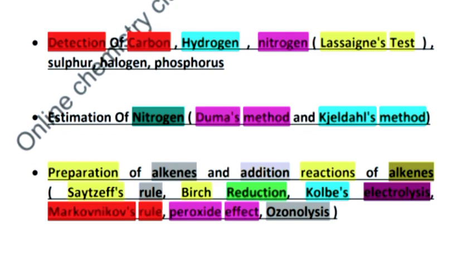Preparation of alkenes will be very important, and addition reactions of alkenes. There are some important rules and reactions like Zaitsev's rule, Birch reduction, Kolbe's electrolysis, Markovnikov's rule and anti-Markovnikov's rule, that is the peroxide effect. Ozonolysis is very important.